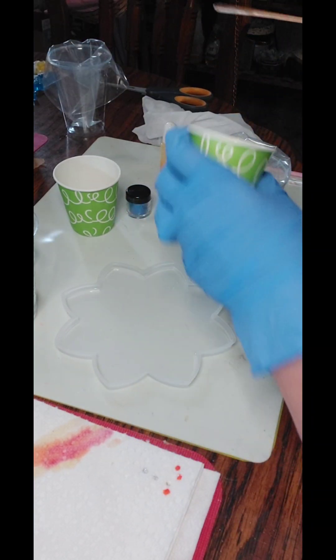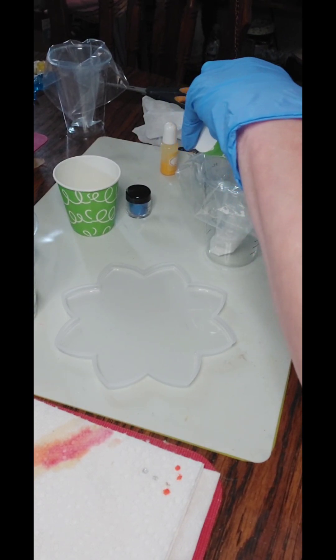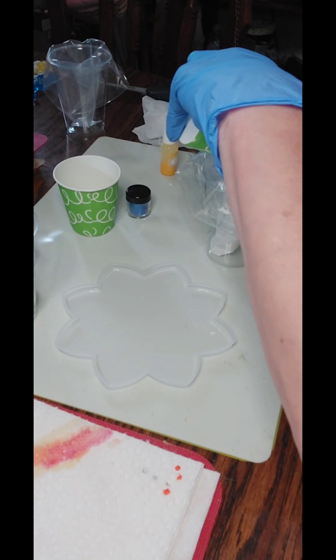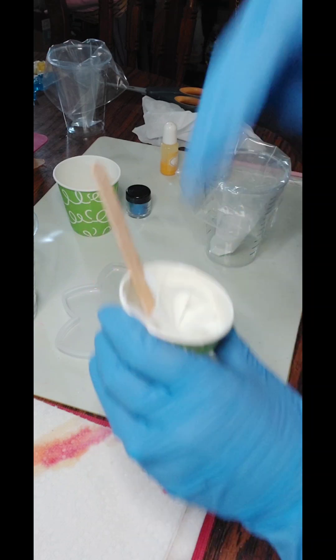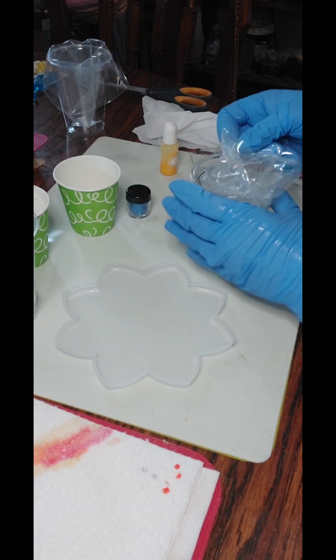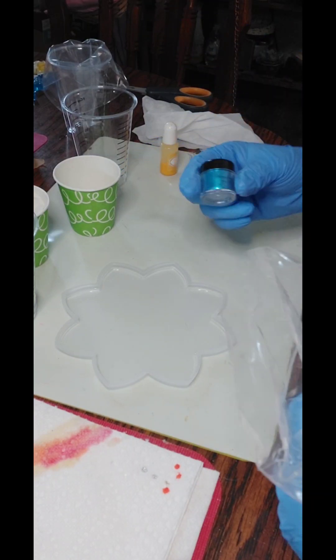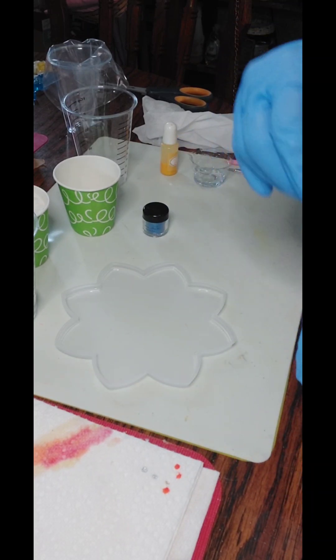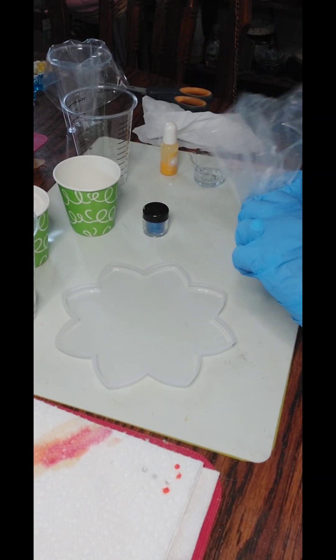We're gonna put that in our piping bag and we are going to go ahead and pipe our white. And then we will mix up our blue. It's actually a chameleon powder which I have not tried before. It's blue, purple, and red for the centers. And I have my yellow for my little pistils, I guess that's what they're called.